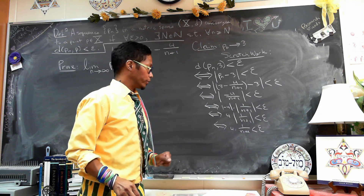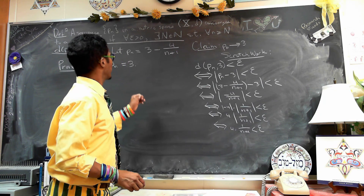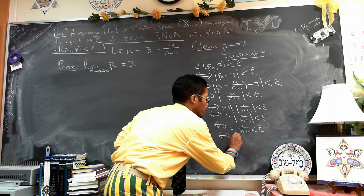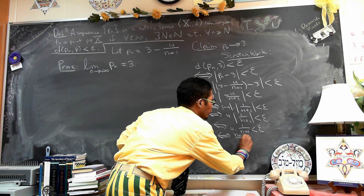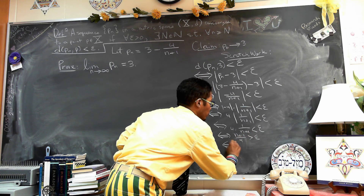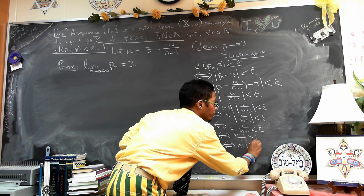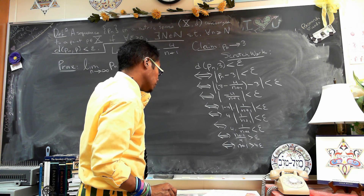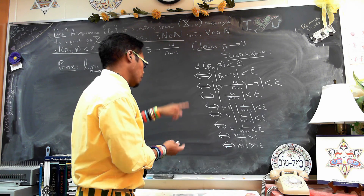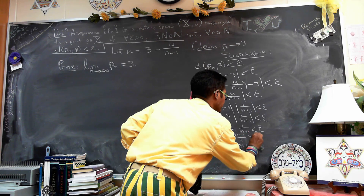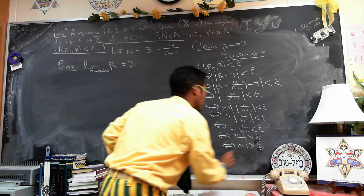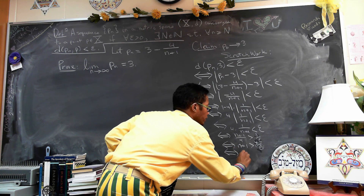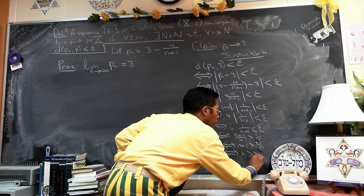This holds because n is always greater than or equal to 0, since n is indexed by the natural numbers. By inverting, we have (n+1)/4 greater than 1/epsilon, which means n+1 is greater than 4/epsilon, which means 4/epsilon minus 1 is less than n.